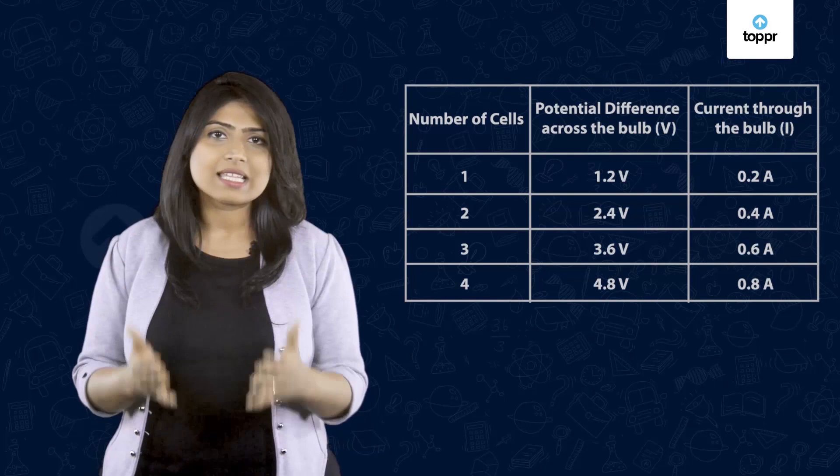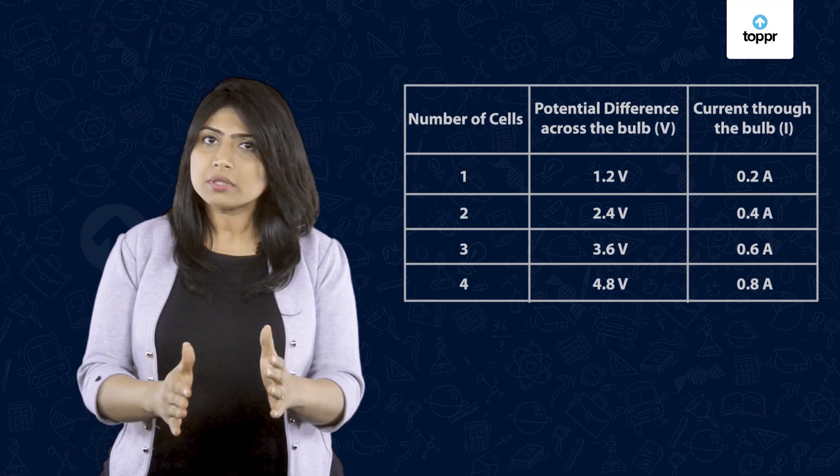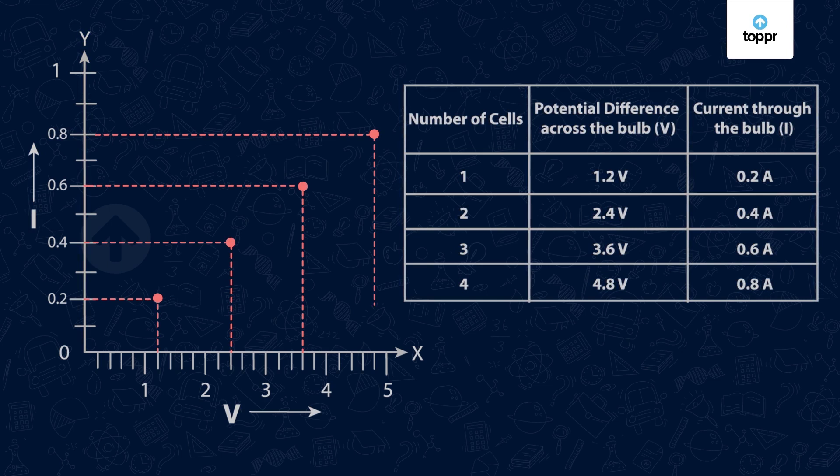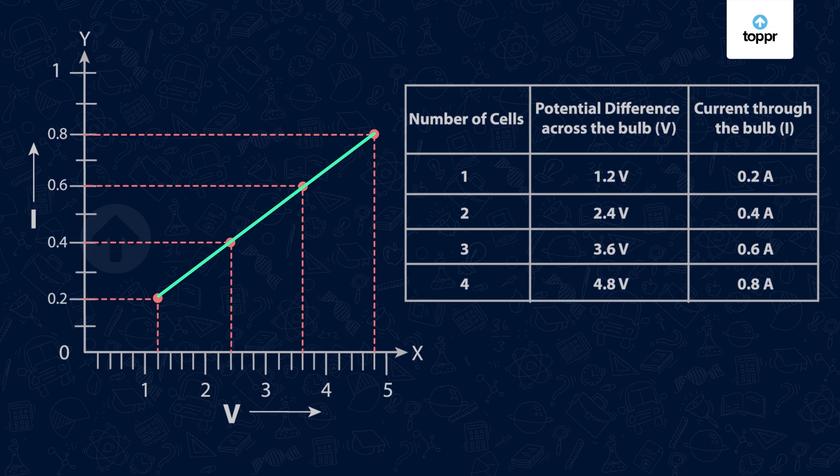Using these readings, let us find the relation between V and I. In order to do that, we can plot a graph. On the x-axis is the potential difference and the current is on the y-axis. Let's take the readings and plot them one by one on the graph. If we join them, we can see that the graph comes out as a straight line.